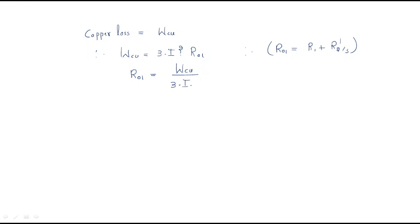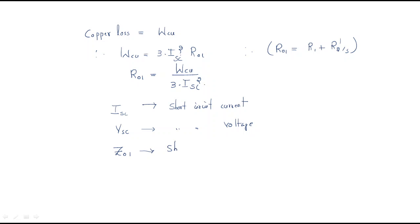Here ISC is the short circuit current and VSC is the short circuit voltage. We also directly obtain Z01, the short circuit impedance referred to primary, as Z01 = VSC / ISC.